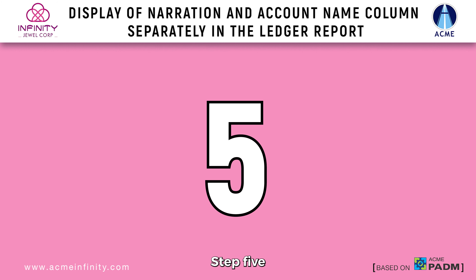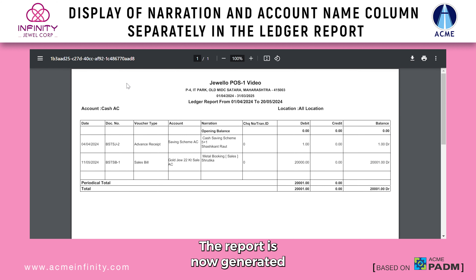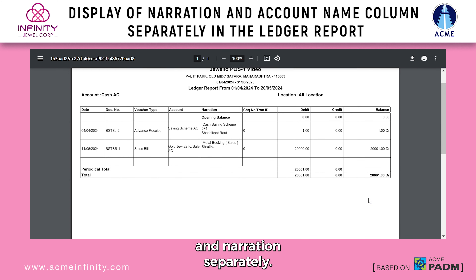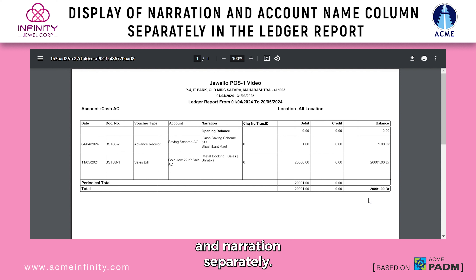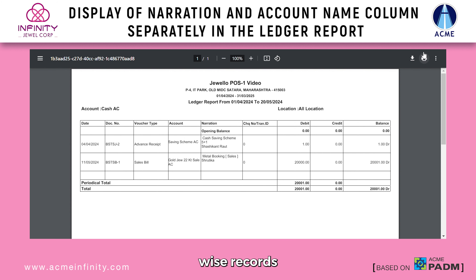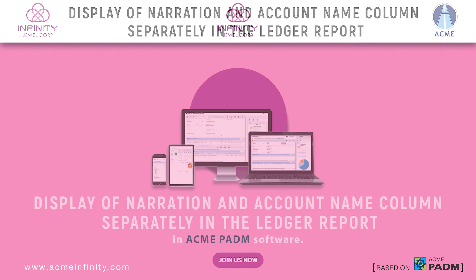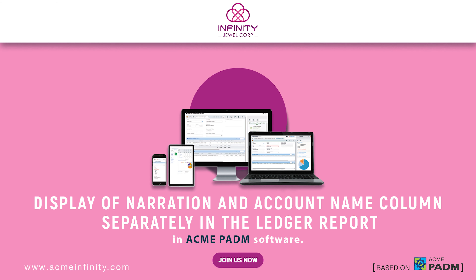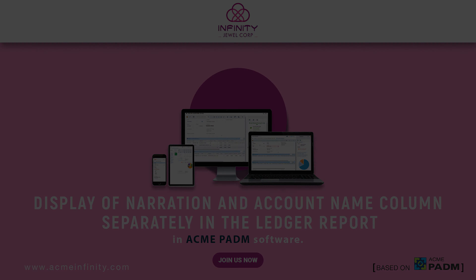Step 5: The report is now generated, displaying account name and narration separately. This makes it easy to filter account-wise records in the Excel file. Infinity Jwell Corp ERP, where detailed financial reporting is made simple, ensuring you have clear and organized data.